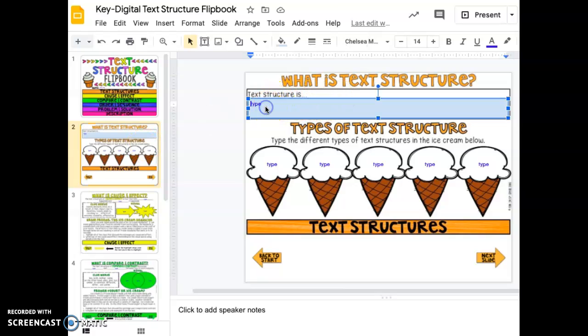Text structure is how information is organized in a passage or any piece of text. It's how the author organizes their information and what kind of tools they use in order to make sure that they get their point across.